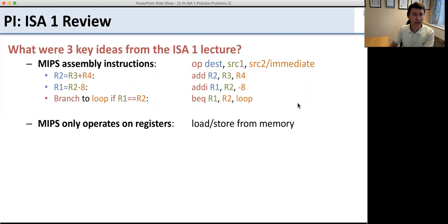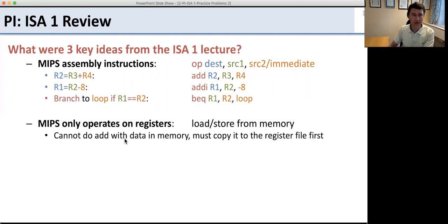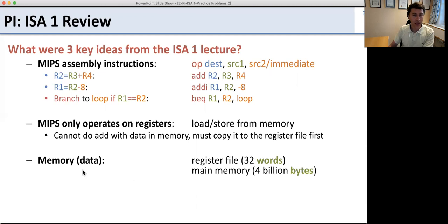The second idea is that MIPS operates only on registers — we have to load and store to get data from memory. You can't do an add directly on data in memory; you have to first copy it into the register file. The third idea was how memory works in MIPS: the register file has 32 words of four bytes each, and main memory supports up to 4 billion bytes, or four gigabytes.